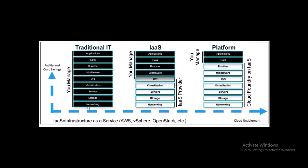Let's look at this diagram to get more clarity on Cloud Foundry. In traditional IT, you manage everything from networking to application. Then digital IT transformed into IaaS — Infrastructure as a Service — like public or private cloud. In this model, you are managing middleware like JBoss and Apache Tomcat, runtime like .NET or Java, your application binaries and data, while your cloud provider like AWS, Azure, or OpenStack manages networking to OS.